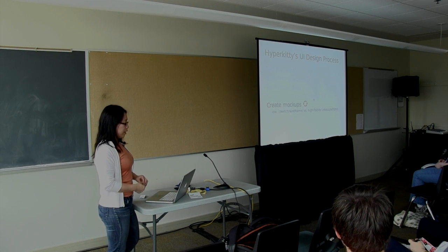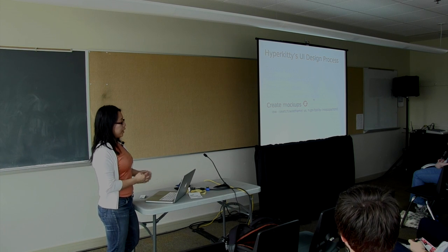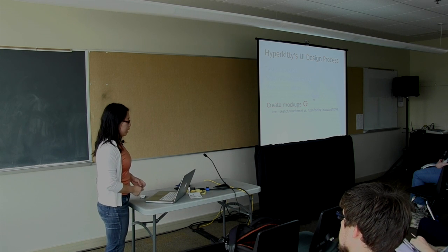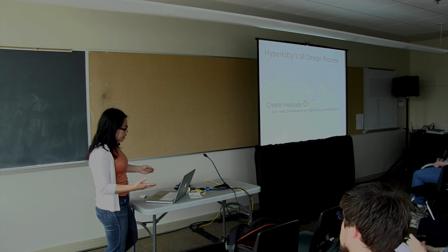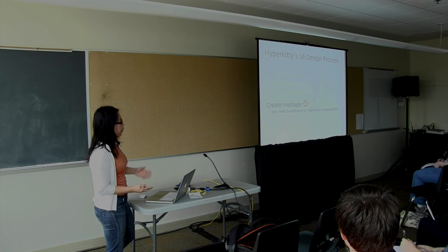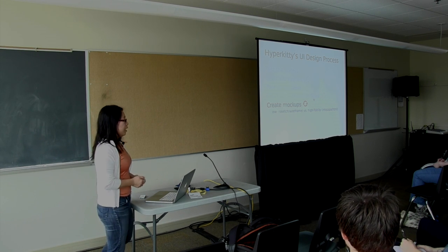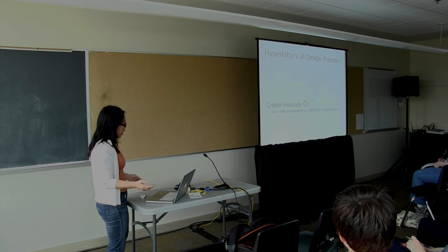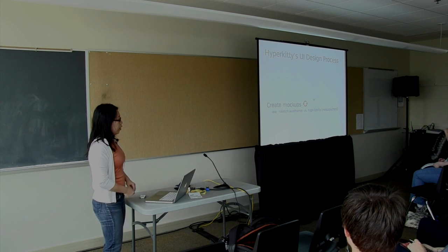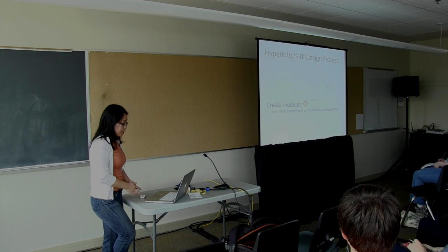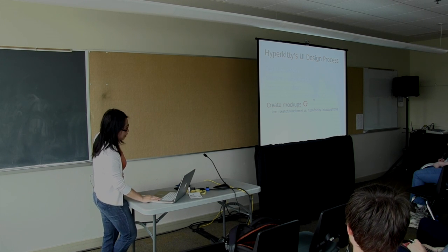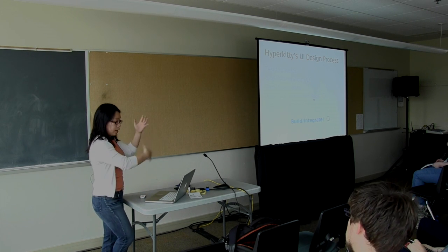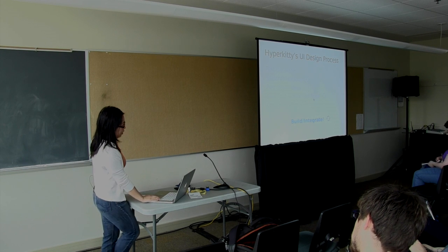From the site map we did mockups. Using a site map is a really good way to identify the high-priority pages to do first so you can get an interaction flow actually working. You can do either low-fidelity — wireframes or pen-and-paper sketches — or high-fidelity, which is either graphical or interactive HTML. What we did was go high-fidelity, and after that we built it and integrated it with the built backend.